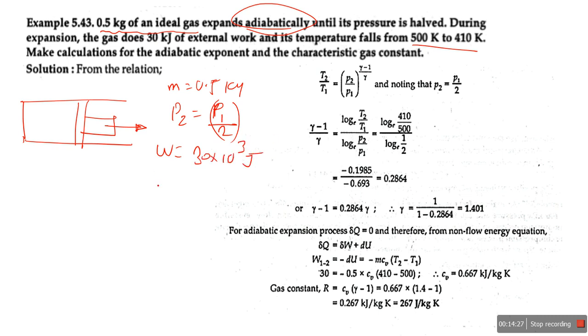Temperature falls from T1 = 500 Kelvin to T2 = 410 Kelvin. We need to find the adiabatic exponent gamma. Both temperatures and both pressures are given, so again we prefer the TP relation and take log on both sides to solve for gamma.